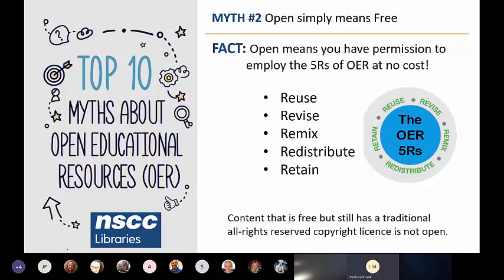Something can be free and retain a very restrictive all-rights copyright licensing model. So for something to be open, you have to be able to employ the five R's.